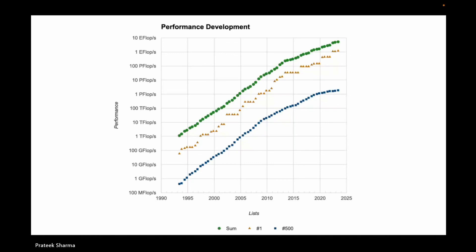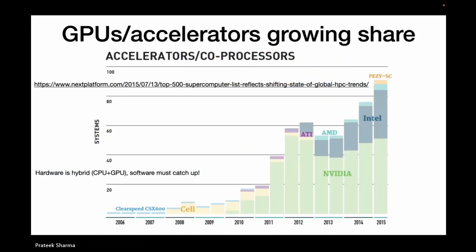This chart shows how accelerators have become very important in big machines. From 2006 to about 2010, there were no GPUs in HPC — they were limited to gaming. Then slowly they started becoming more and more important. All flavors of accelerators exist now — NVIDIA, AMD, Intel. None of them want to miss out on this. Accelerators and hybrid architectures are here to stay; this is the next big thing.